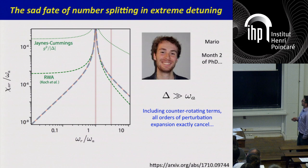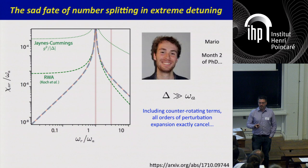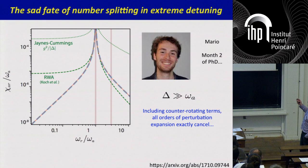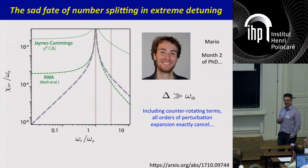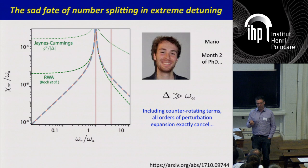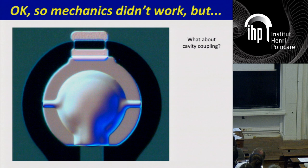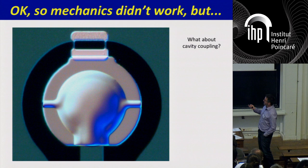My PhD student Mario started doing a perturbation expansion for the coupling between our drum and qubit, including counter-rotating terms which the usual g² / Δ expression does not account for. We had a bit of a surprise: the coupling we expected turned out to be four or five orders of magnitude smaller than expected due to the counter-rotating terms. We had rediscovered why a transmon qubit is so insensitive to charge noise. A disappointment, but the backup plan — increasing the cavity coupling — actually did really work.